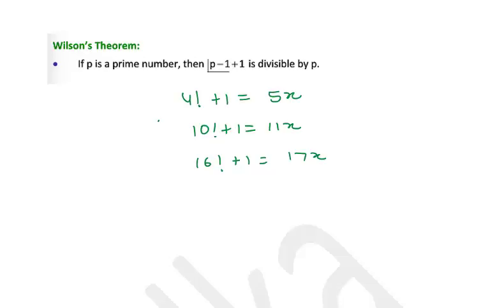in this session I am taking problems and questions based on Wilson's theorem. Many students have sent doubts based on this theorem. So first of all, let's understand what exactly Wilson's theorem is. If p is a prime number, then p minus 1 factorial plus 1 is divisible by p. The necessary condition here is that the number should be a prime number.